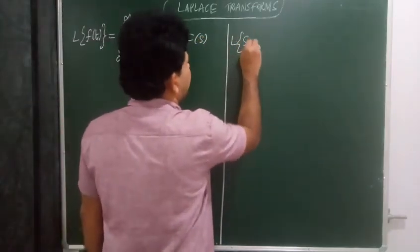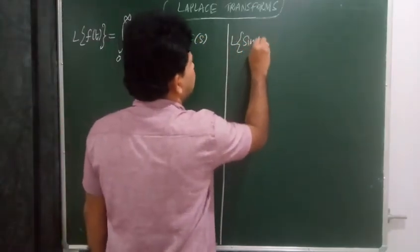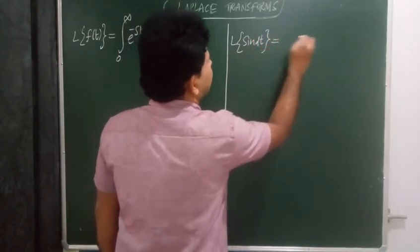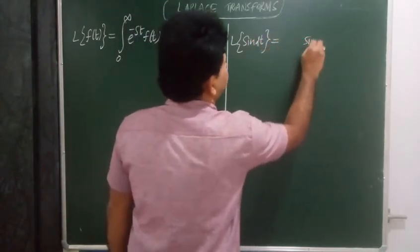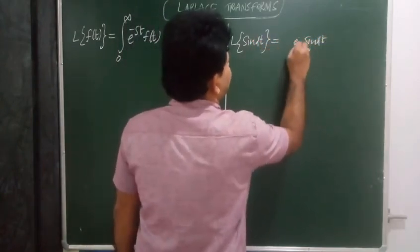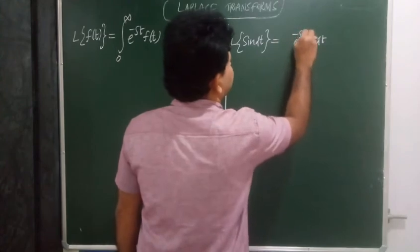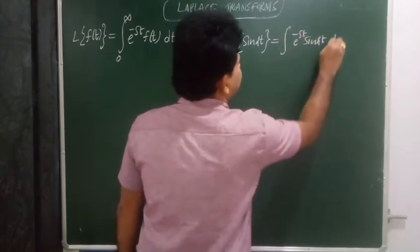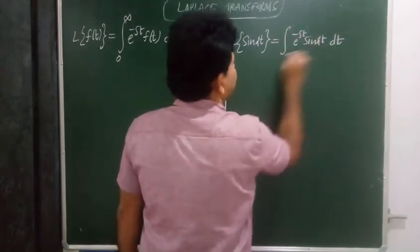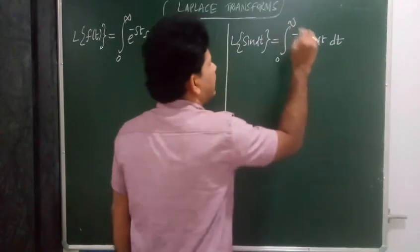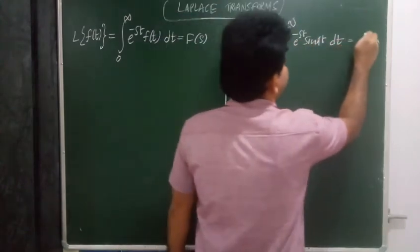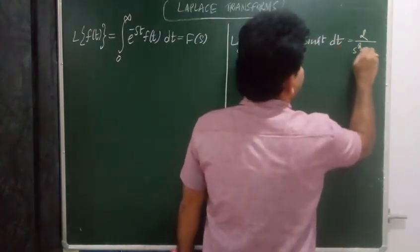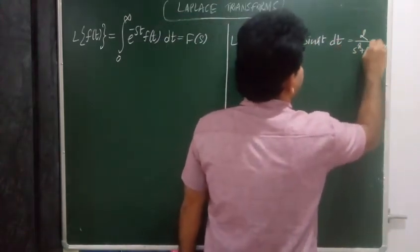For example, the Laplace transform of sin(2t): the function sin(2t) with kernel e to the power minus st, integrated with respect to t between the limits 0 and infinity, gives 2 upon s squared plus 2 squared.